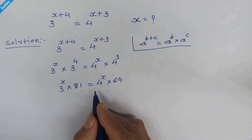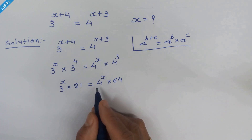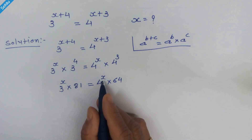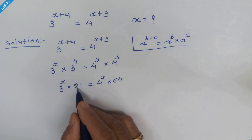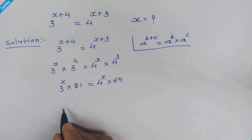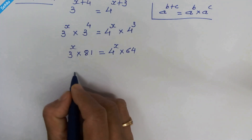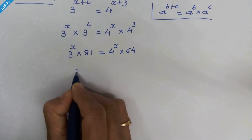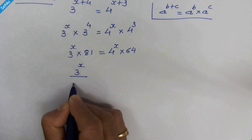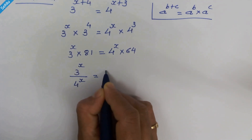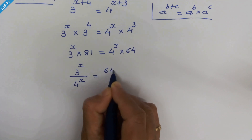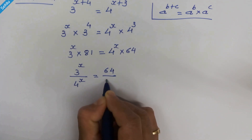In the next step, let's move 4 raised to x to the left hand side and 81 to the right hand side. So we have 3 raised to x upon 4 raised to x is equal to 64 upon 81.